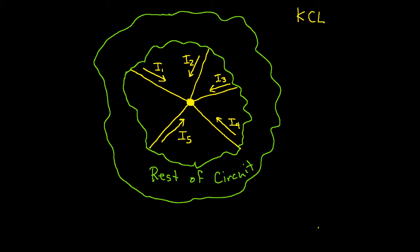Kirchhoff's Current Law works this way. I1 plus I2 plus I3 plus I4 plus I5 is equal to zero. In words, the sum of all the currents entering the node is equal to zero.